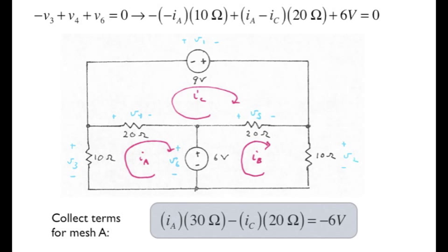Let's point something out now. Note that the quantity in front of I sub A is the sum of the resistors in mesh A. And the quantity in front of IC is minus the total resistor value shared by the two meshes. That minus 6 volts on the other side of the equal sign comes from the voltage source. Though the I sub A arrow enters the positive reference terminal, there's a minus sign because we've moved it to the other side of the equation.